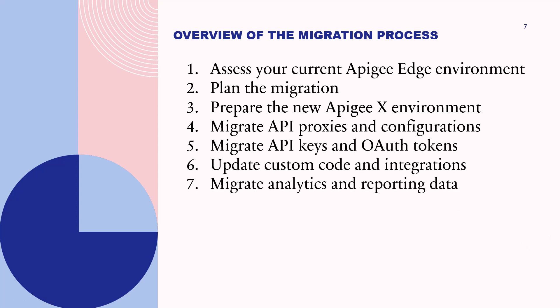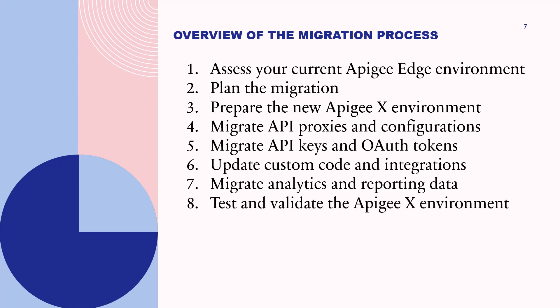Seventh, migrate analytics and reporting: export your analytics data and import it into Apigee X, and ensure that any custom reports and dashboards are compatible with the new environment. Eighth, test and validate the Apigee X environment by performing thorough testing of your API proxies, policies, custom code, integrations, and analytics. Validate that everything is working as expected and address any issues. Ninth, redirect API traffic to Apigee X gradually using techniques like DNS changes, weighted load balancing, or API proxy routing to manage the traffic shift.